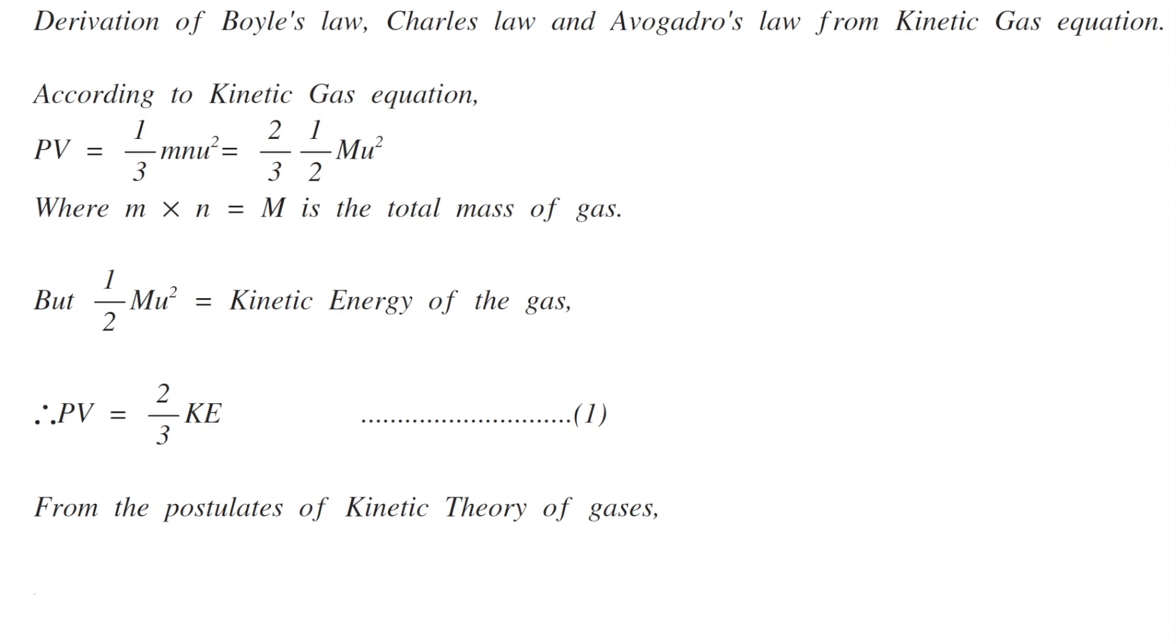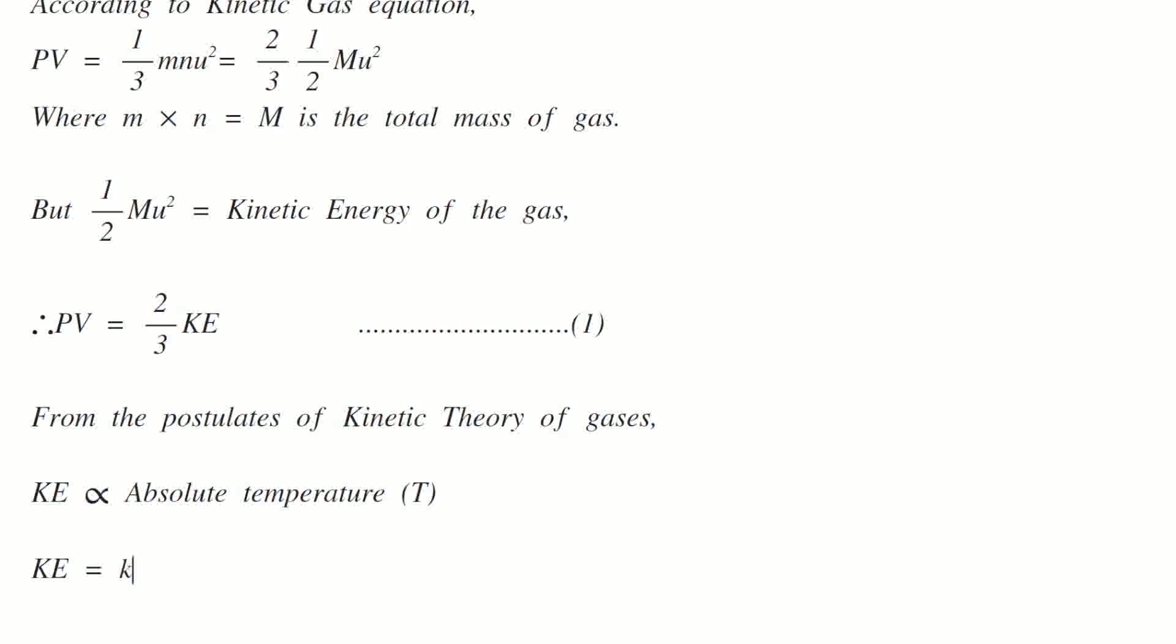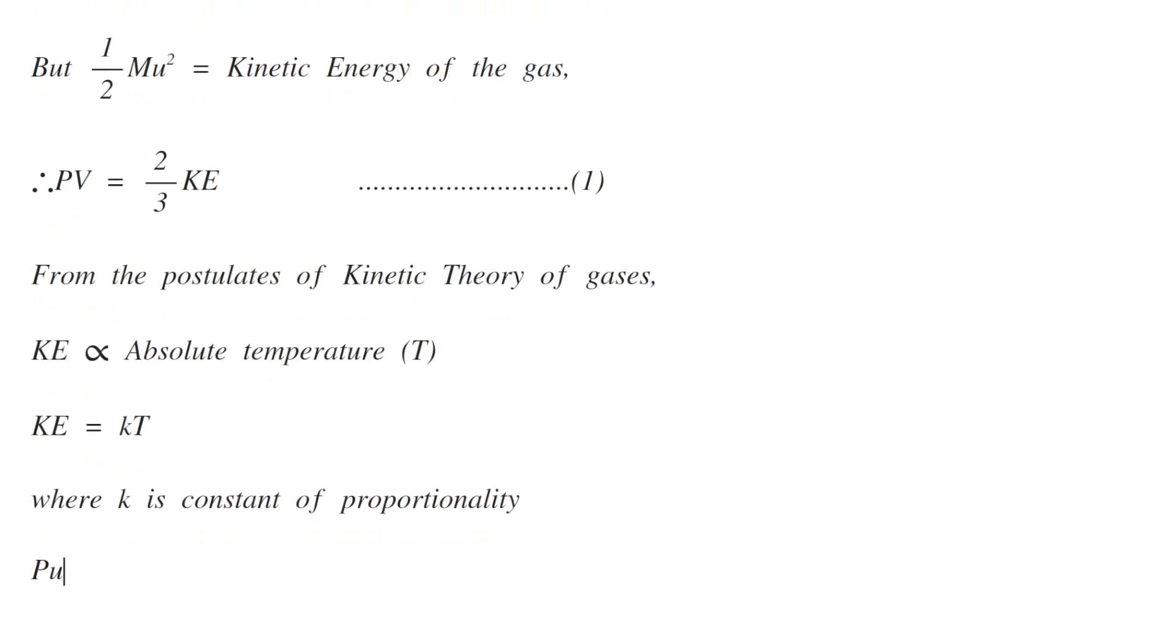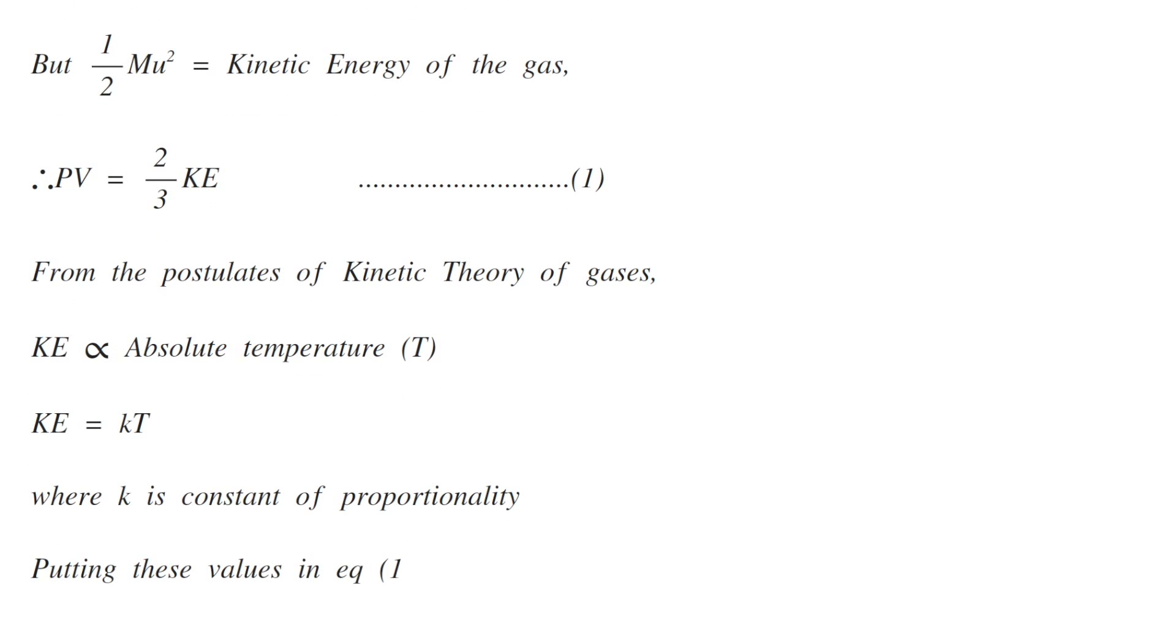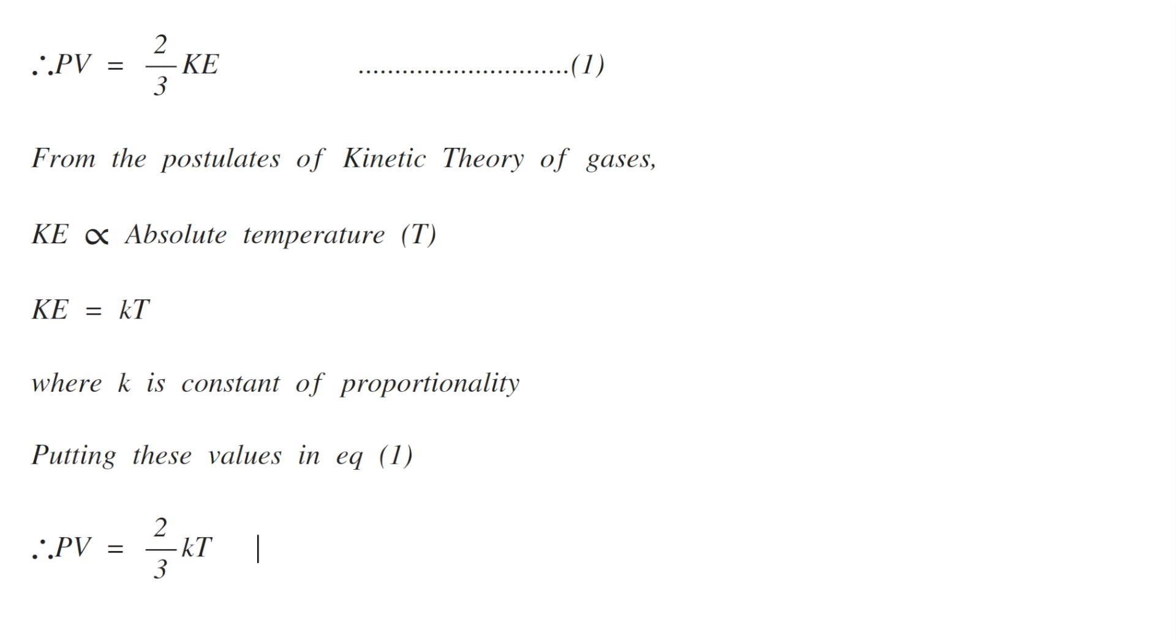From the postulates of kinetic theory of gases, kinetic energy is proportional to absolute temperature T, or KE equals kT where k is a constant of proportionality. Putting these values in equation 1, PV equals 2/3 kT.